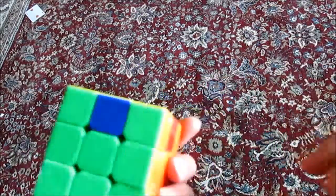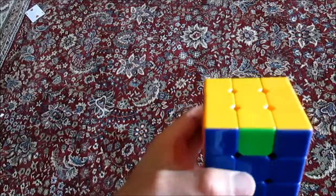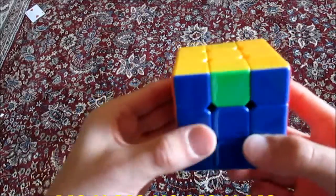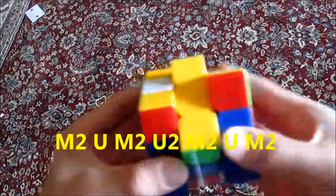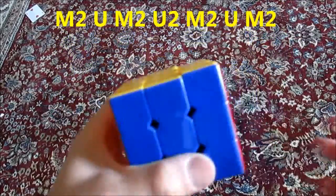And then now we have all headlights on all the sides, right? So what we're going to do in this case is we're going to be doing something called the H perm. That will go in this a little bit more detail later. So you're going to do M2 Up M2 Up M2 Up M2. So I'll go through that a little later.